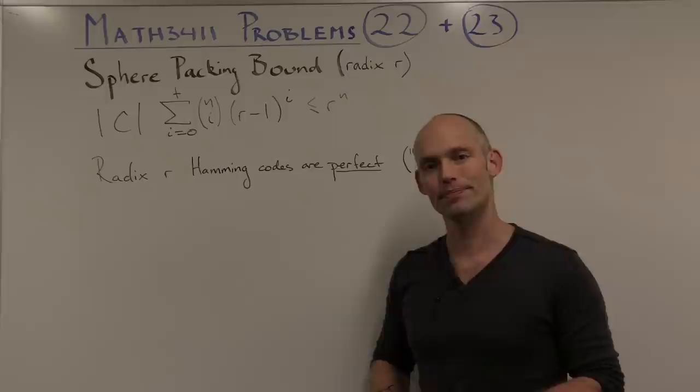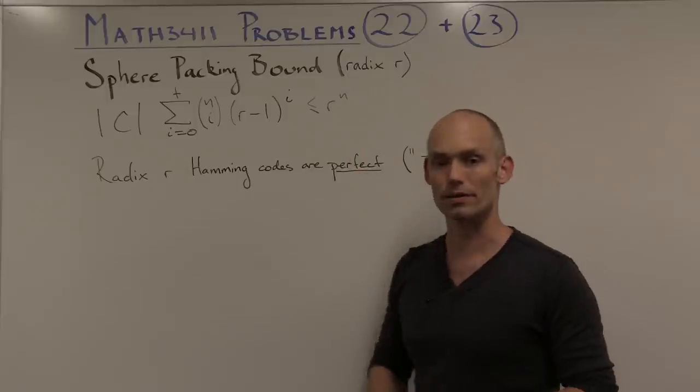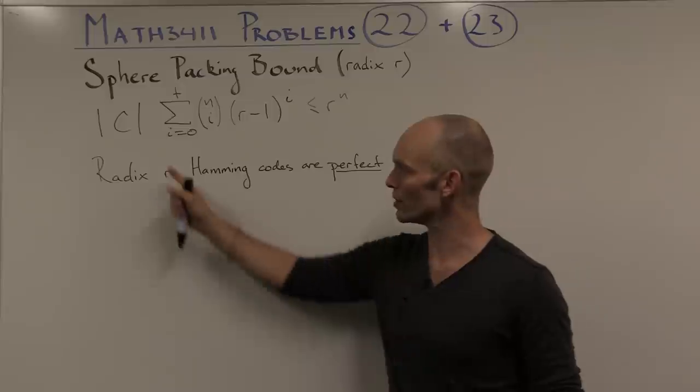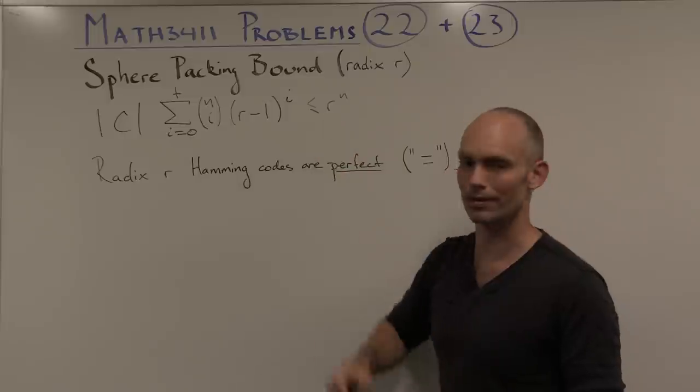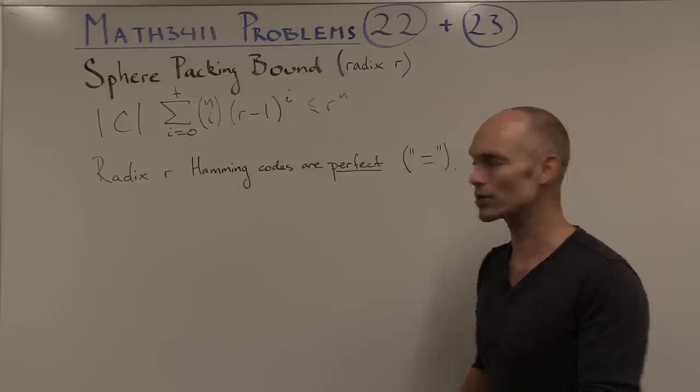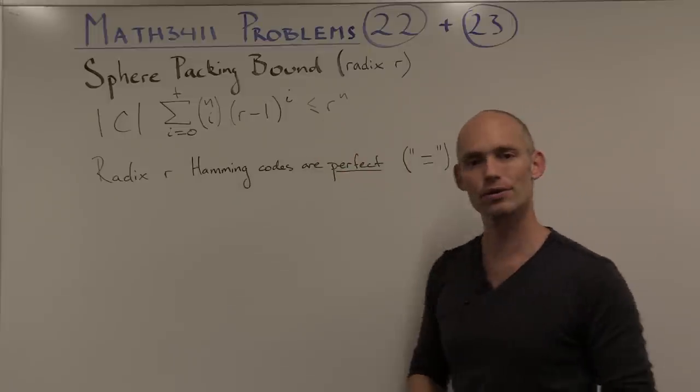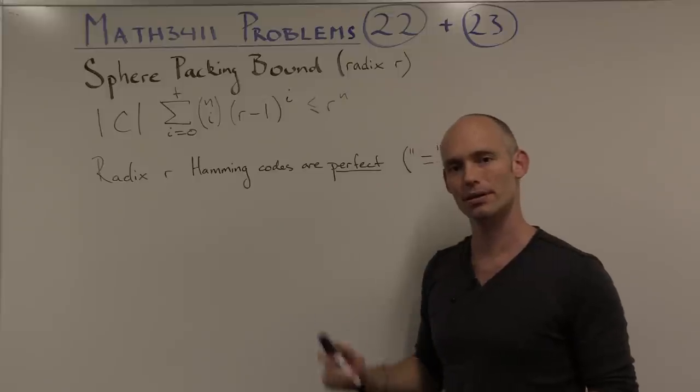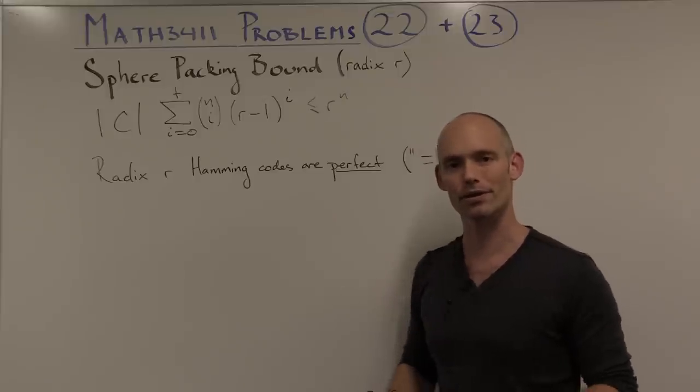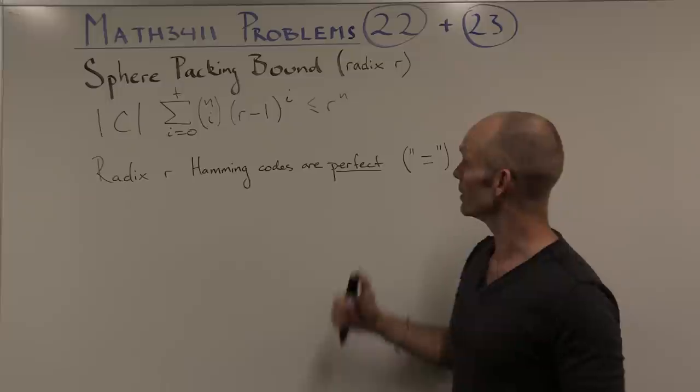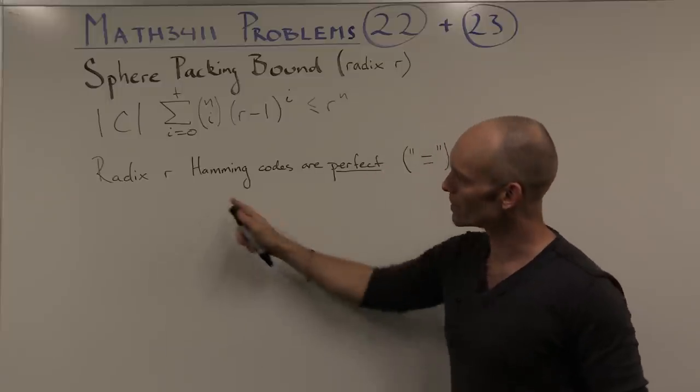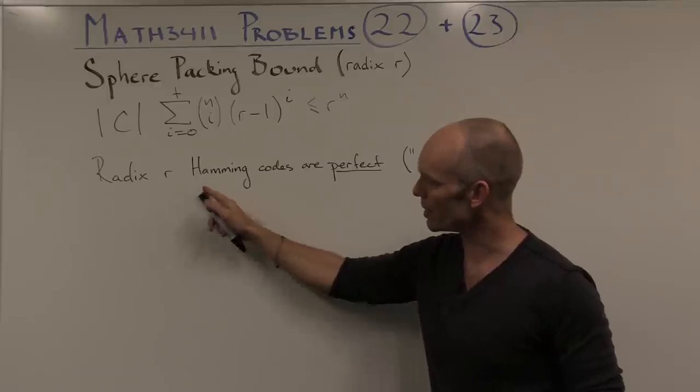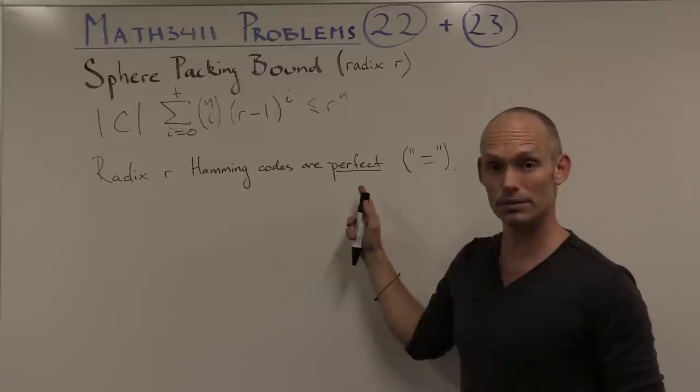Now our natural question would be, when is the sphere packing bound actually achieved? Which codes would satisfy that we have an equal sign in this inequality? Those codes are called perfect codes, and we saw in the lectures that in the binary case, there weren't very many of those types of codes. In the general case, things are a bit different, but we have to show that the radix r Hamming codes actually are perfect.